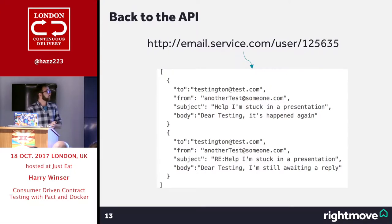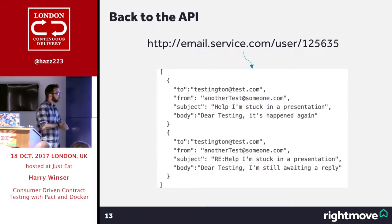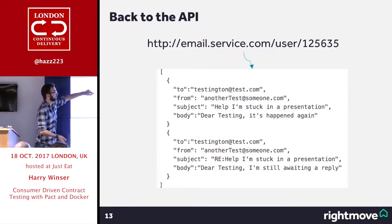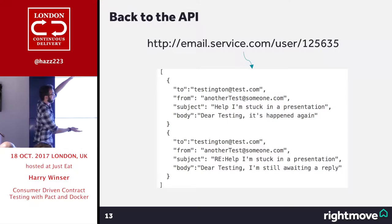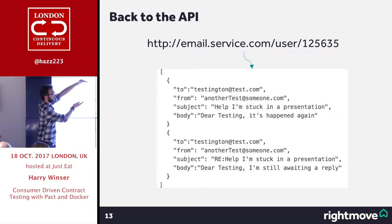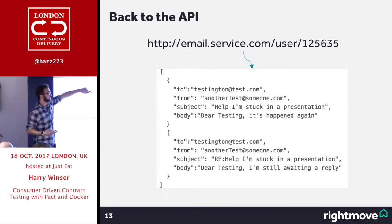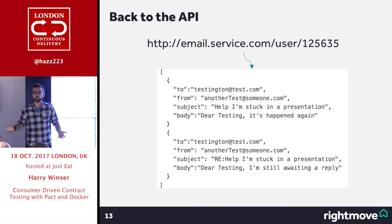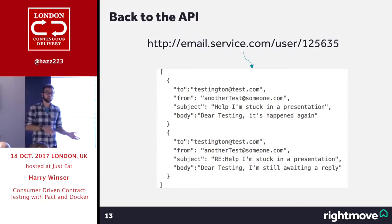Back to the API. When it comes to Pact and consumer-driven contracts, you're defining things like: when I send this request, I expect an array, I expect this kind of JSON — specifically a 'to' field, 'from' field, 'subject', and 'body'. If another service doesn't need the body, you don't define it, and then the provider never needs to provide it. This becomes important with API migration, which is super important when you think about consumer-driven contracts.